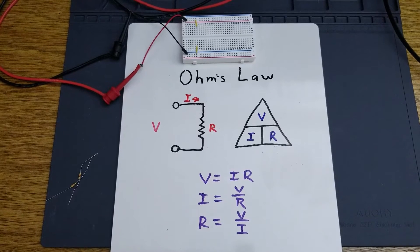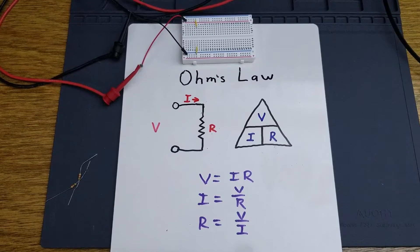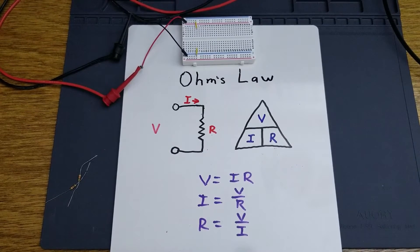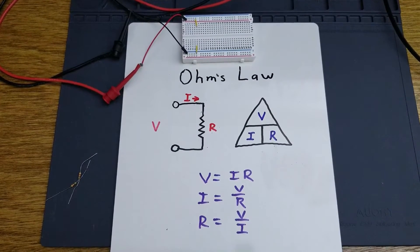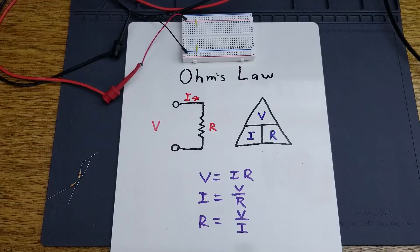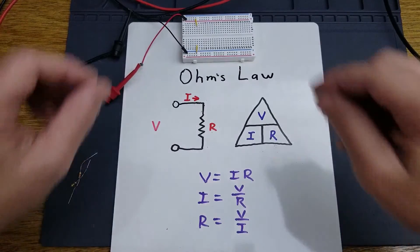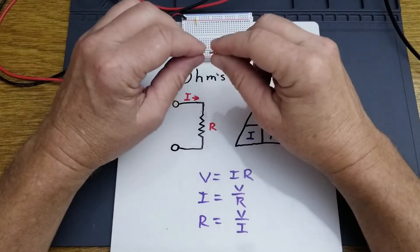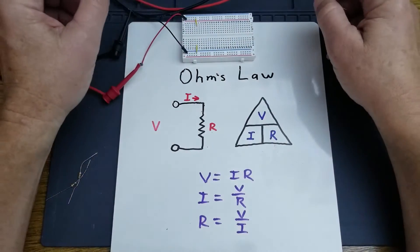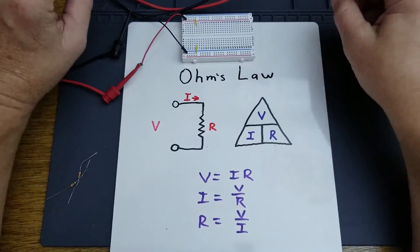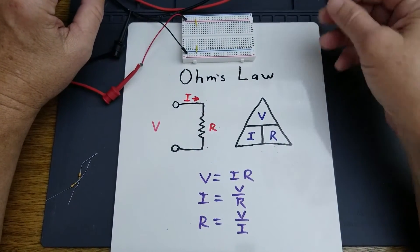This is a quick video about Ohm's Law. Ohm's Law states that current is proportional to voltage and resistance in a resistive circuit. It doesn't matter if it's DC or AC voltage, but if it's a resistive circuit, Ohm's Law applies.